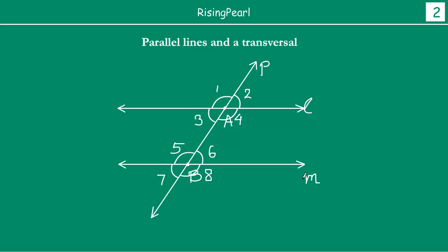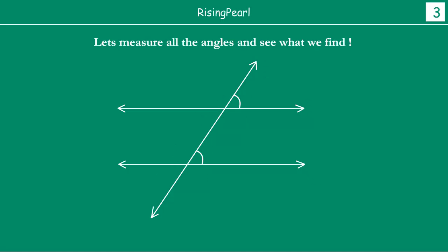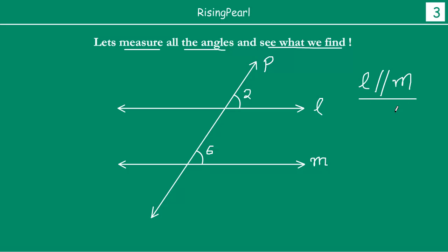Now we are going to do a small experiment, and you can see how important this experiment is. The experiment is this: let us measure all angles and see what we find. This is our line L and this is our line M. This is our line P, and we are given that line L is parallel to line M. We have drawn transversal P. So we will measure the angles — please go ahead and do this exercise. You can pause the video and actually do this exercise as we are discussing this.